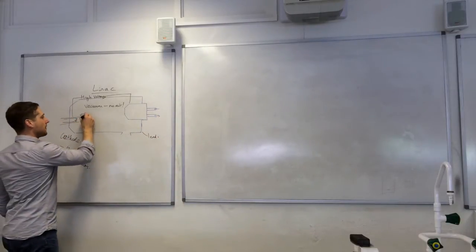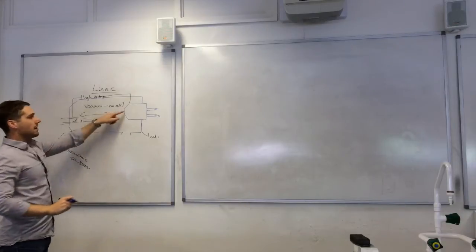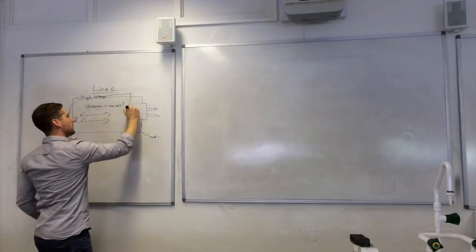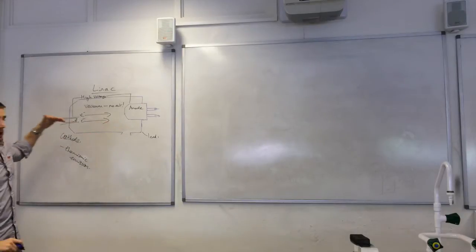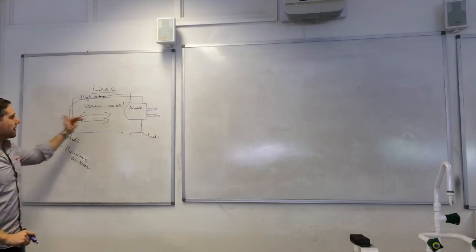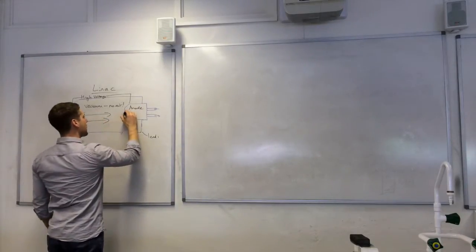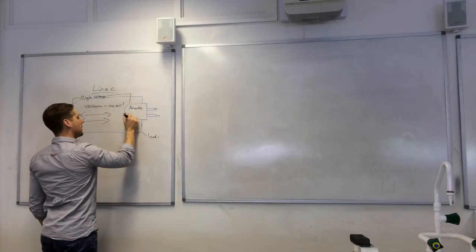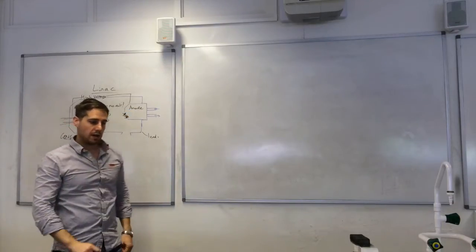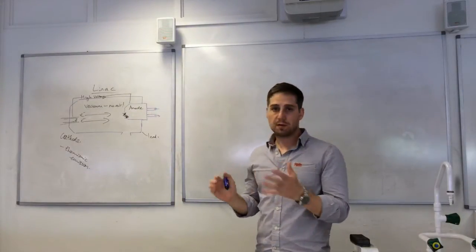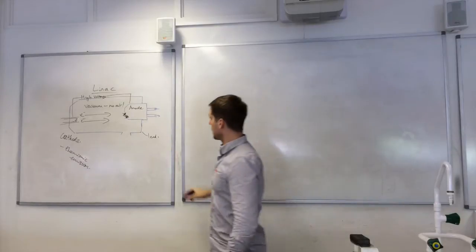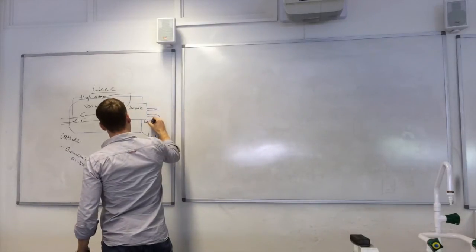And this is the anode. That's positive. So the electrons are attracted towards that, they're accelerated through here. And then they crash into the anode here. And when they hit the anode, they experience a large deceleration.